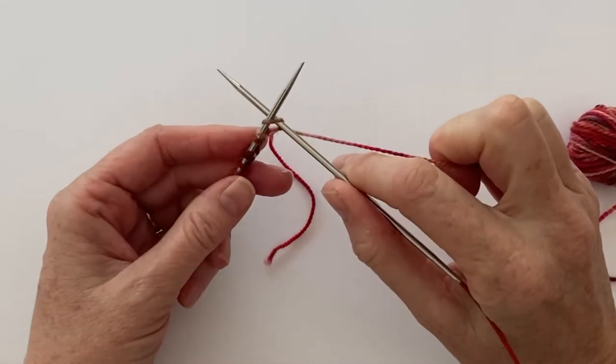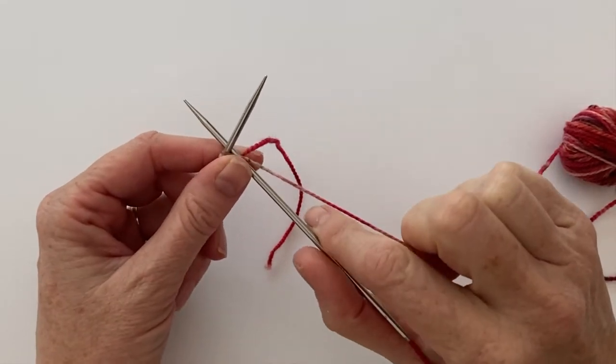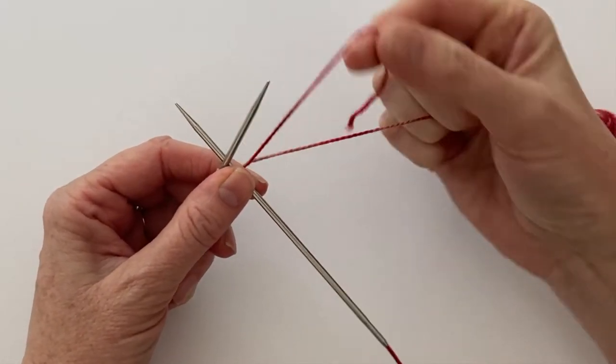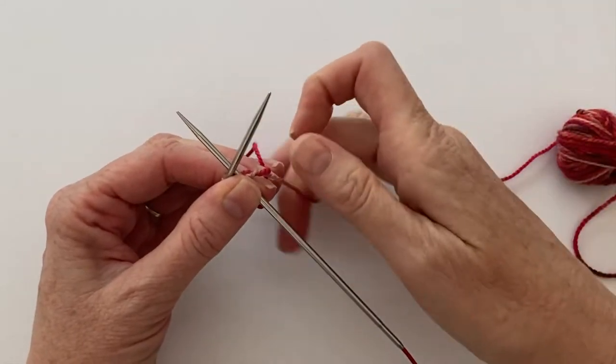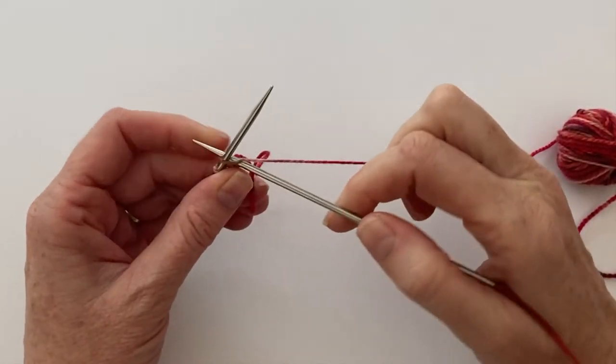I've cast on a couple of stitches here. As you get ready to knit the first stitch, wrap the tail around the working yarn, knit your stitch.